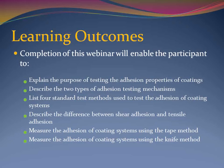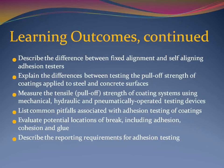We have 12 outcomes associated with this webinar. Completion of this webinar will enable you to explain why coatings may be assessed for adhesion properties, describe two adhesion testing mechanisms, be able to list four ASTM test methods for evaluating adhesion, be able to describe the basic differences between shear or peel-back adhesion and tensile or pull-off adhesion, measure the adhesion using a tape method, and measure the adhesion using the knife method.